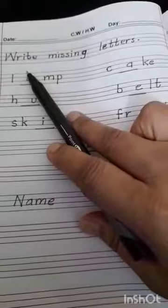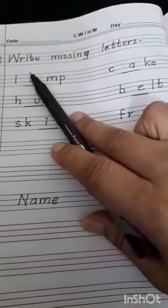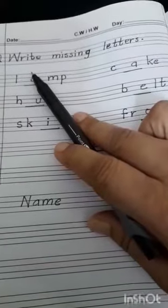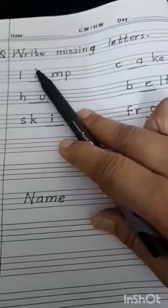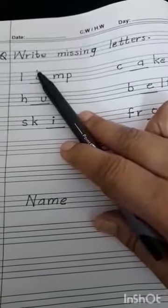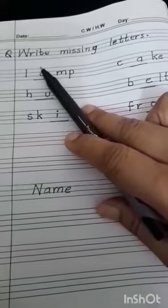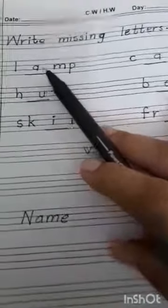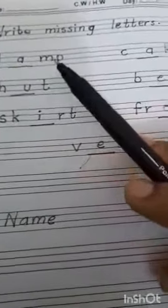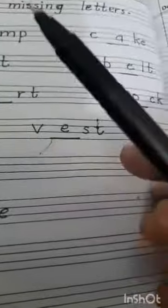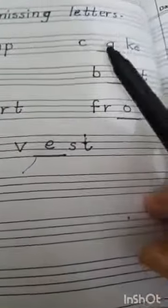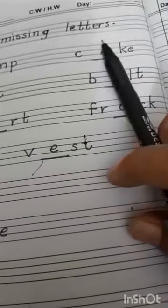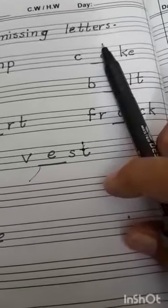So the first word is L-blank-M-P. Which letter is missing here? Yes — A. L-A-M-P. The word is LAMP.